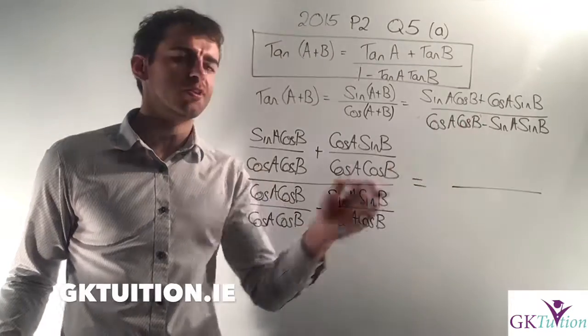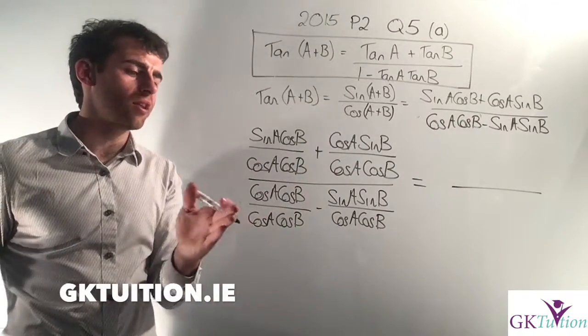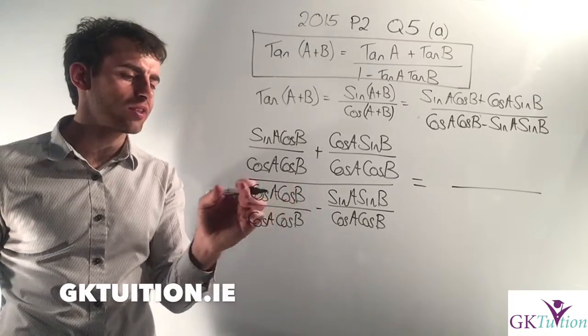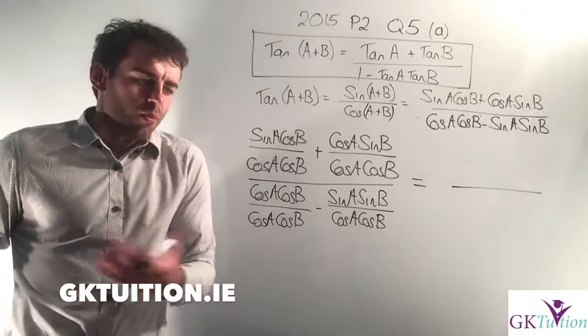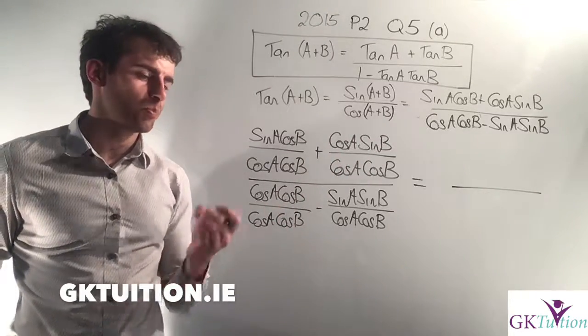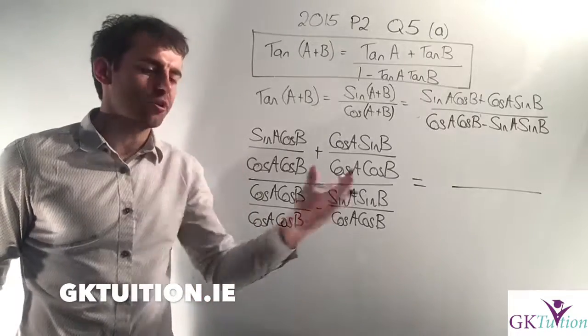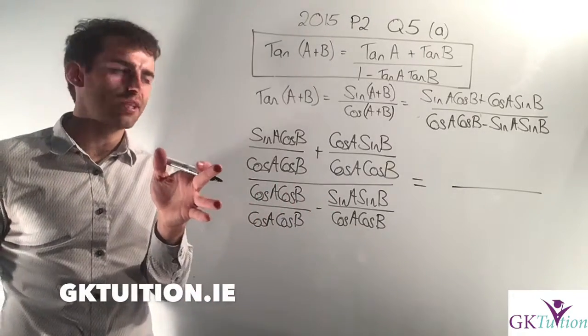Well to convert any number into a one, you just divide it by itself. So I know that on the next line I want to divide cos A cos B by itself. But I can't just randomly divide one of my terms by cos A cos B. If I'm going to divide this term by cos A cos B, I have to divide all of my terms by cos A cos B. So that's all that I've done on this line. I have my four terms here and I divide all four of them by cos A cos B.